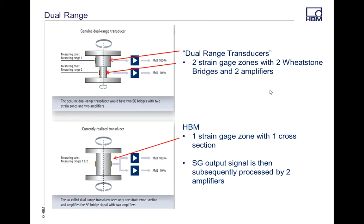On ours, the way that we do ours is one strain gauge zone, one strain gauge cross-section. Again, ours is on the inside. Our strain gauges are on the inside. And then they're set up by two different amplifiers.